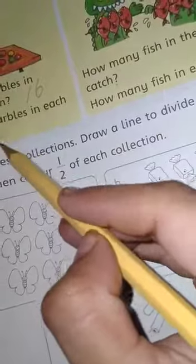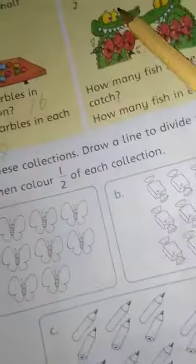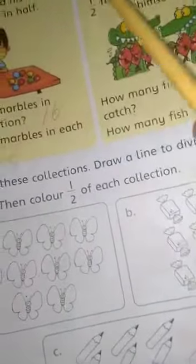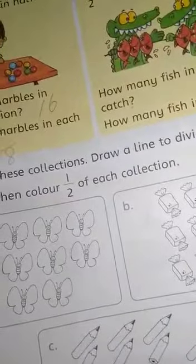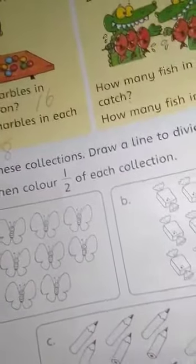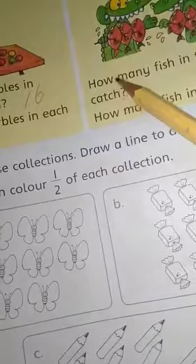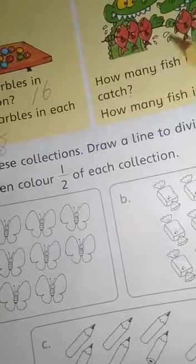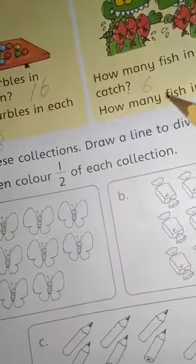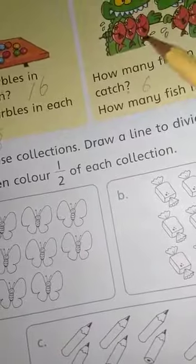8, 8. A crocodile has divided fish catch into two equal parts, 1, 2 for his friend and 1, 5 for himself. How many fish is in the whole catch? 6. How many fish in each half? 3, 3.